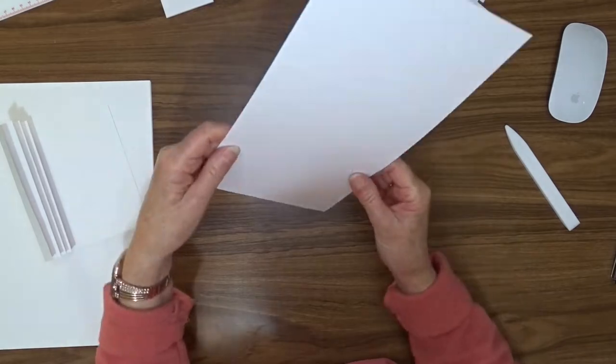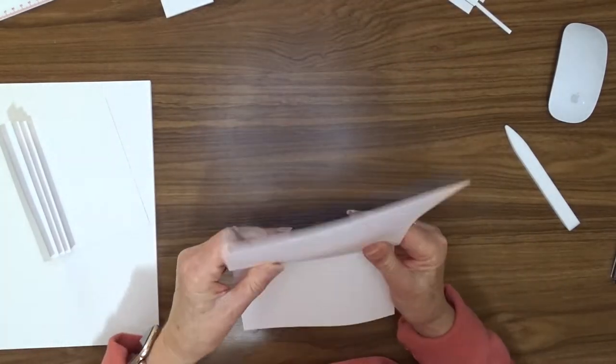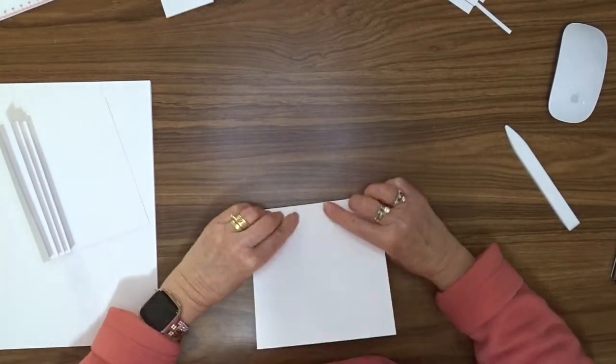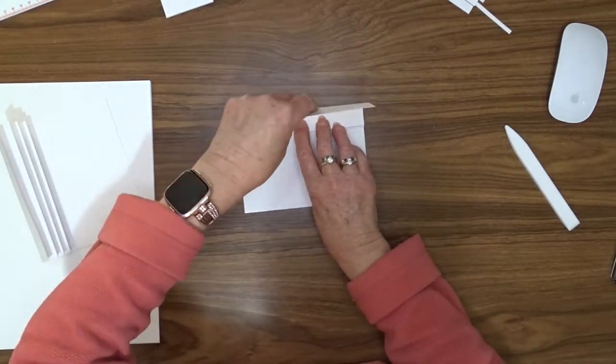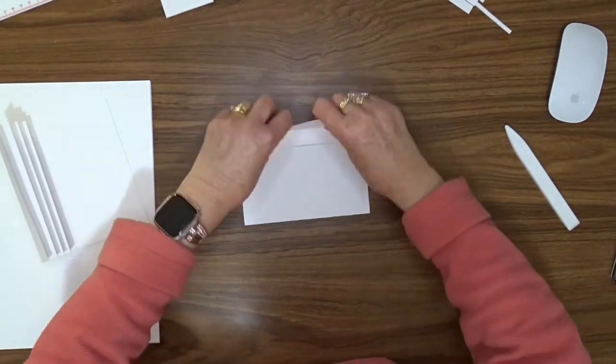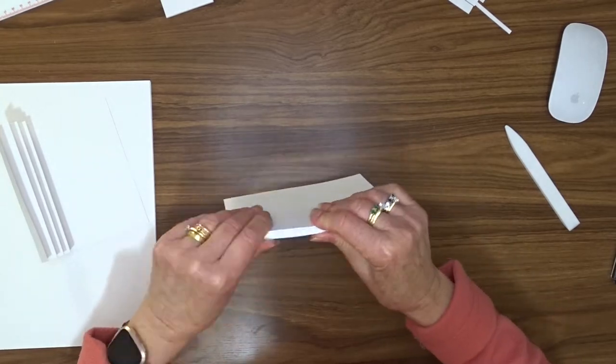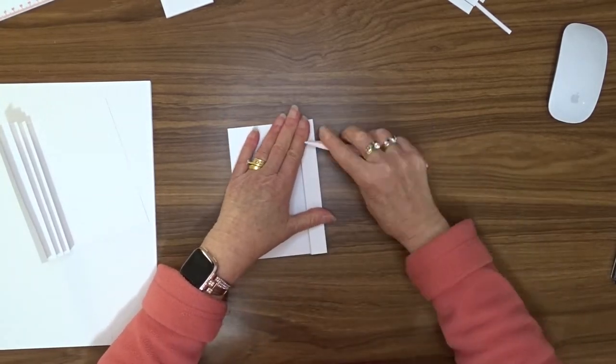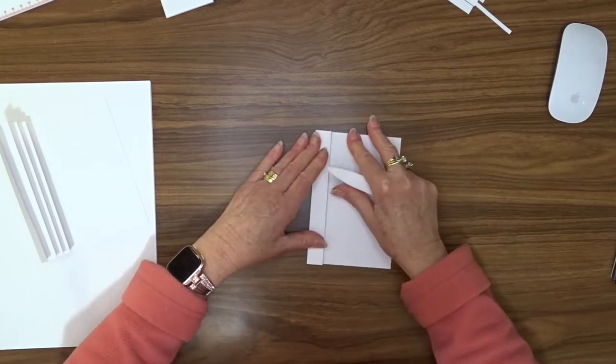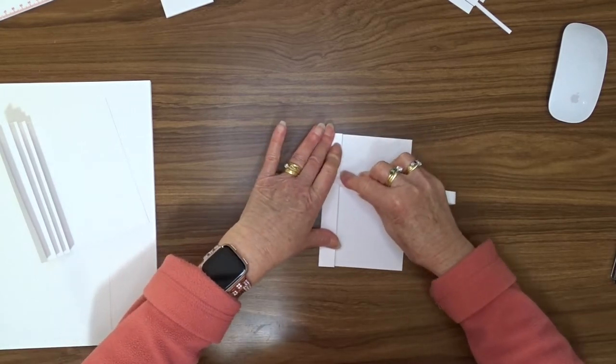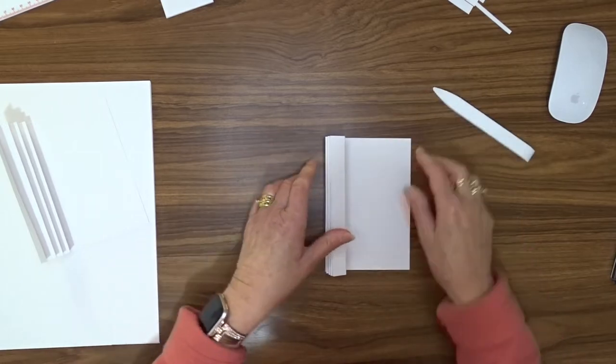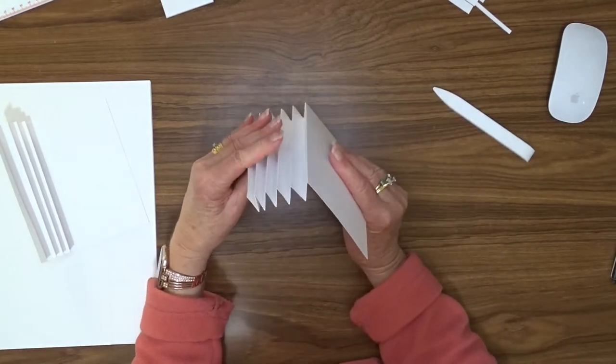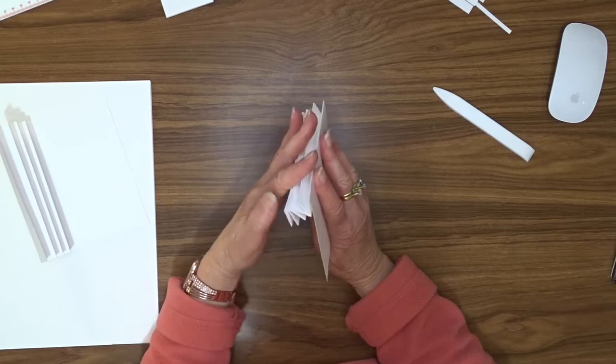Do this for both pieces of cardstock that we've scored. The first one I did I actually burnished each fold as I made it. And I found that that didn't work out quite as perfectly as the one where I just folded it and then burnished all of the folds in one hit. So try both ways but I think that you'll be better off if you just fold, fold, fold, fold and then burnish at the end when you've got all of your folds in place.